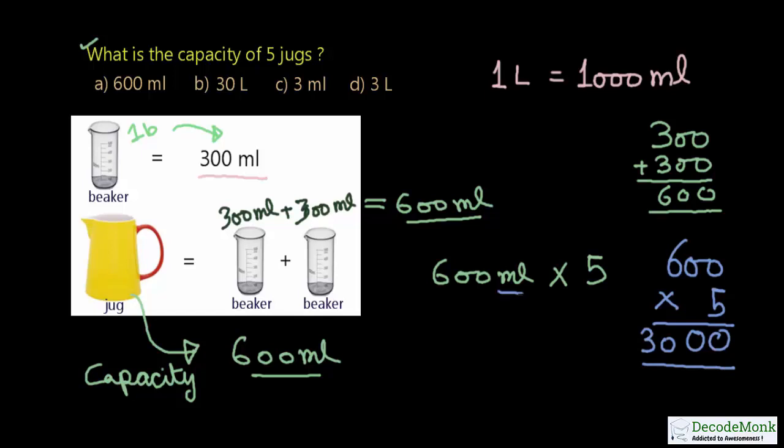The answer is 3000. Since the unit is milliliters, the answer is 3000 milliliters. So the capacity of 5 jugs equals 3000 milliliters.